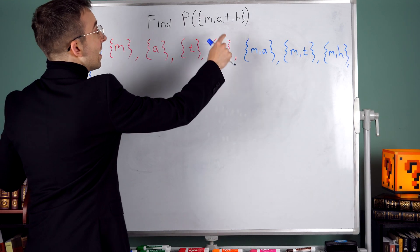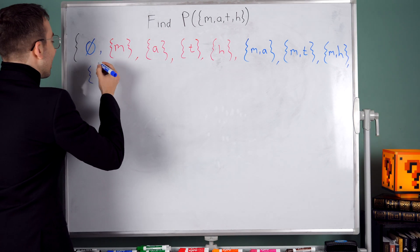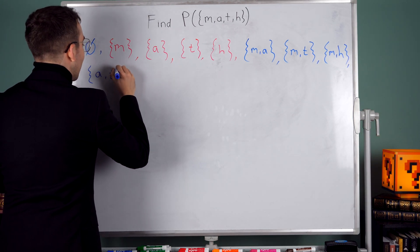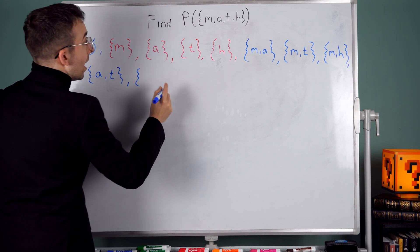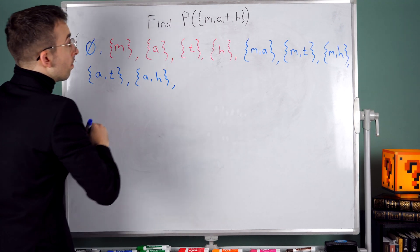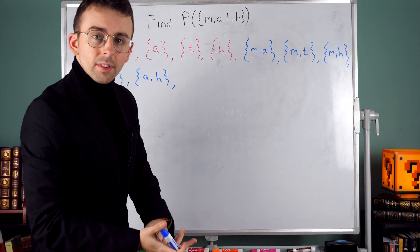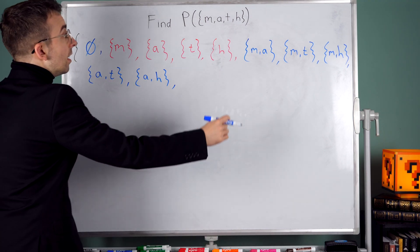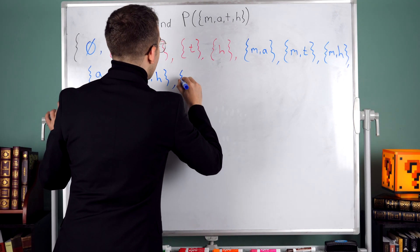Well, the next one I'm going to look at is the one that has a and t. Then I'm going to look at the subset that has a and h.